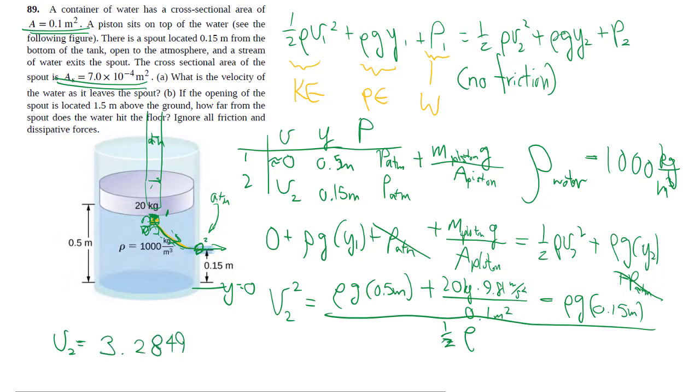Using calculator, take the square root. And since they asked for velocity we have to include the direction, which is to the right, because it's going to be 90 degrees to the face of the opening.